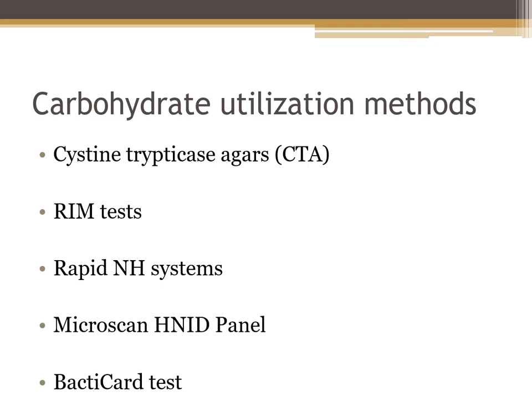There are a number of carbohydrate utilization methods to identify Neisseria species. We can use cysteine trypticase agar (CTA) sugars, which are very sensitive media for weak acid production. Neisseria produces weak acids during fermentation — CTA sugars start out pink and turn yellow as fermentation occurs. We can also use RIM tests (Rapid ID method), a cassette by Rimmel that tests for carbohydrate fermentation. Other options include the Rapid NH system (Neisseria-Haemophilus identification system), Microscan with its special Haemophilus-Neisseria panel, and the Bactacard test, which we'll be doing in lab.